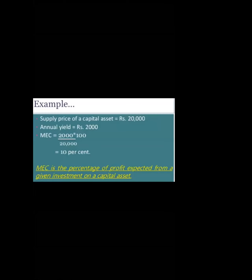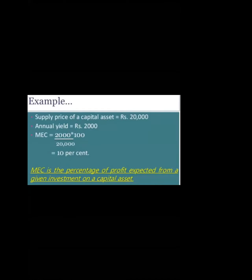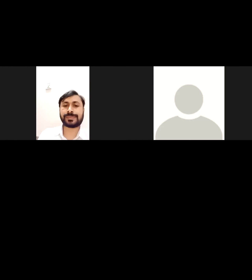Here is a numerical example: the supply price of a capital asset is Rs. 20,000 and the annual yield is Rs. 2,000. To calculate the marginal efficiency of capital: 2,000 divided by 20,000, multiplied by 100, equals 10%. Therefore, the marginal efficiency of capital is 10%. MEC is the percentage of profit expected from a given investment on a capital asset.